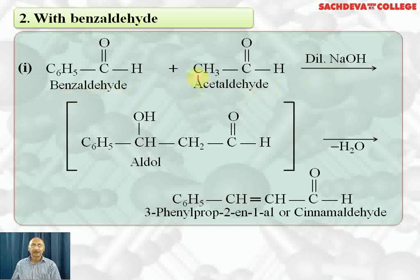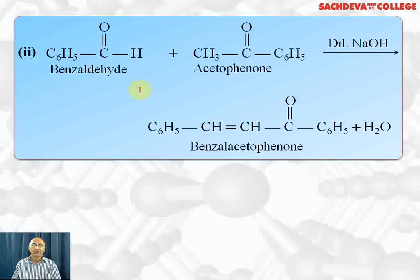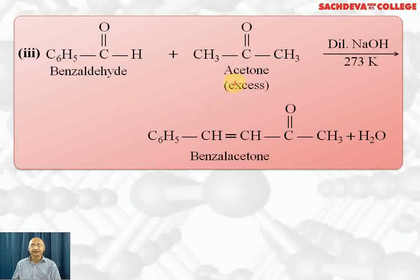With benzaldehyde, this is normally called a Claisen-Schmidt condensation. Benzaldehyde reacts with acetaldehyde in the presence of NaOH: the carbanion of acetaldehyde attacks the carbonyl carbon, the aldol product loses water (OH and H), and we get cinnamaldehyde — popular name; IUPAC name is 3-phenylprop-2-en-1-al. Benzaldehyde undergoing aldol condensation with acetophenone: the carbanion from acetophenone attacks benzaldehyde's carbonyl carbon, followed by dehydration to give benzalacetophenone.